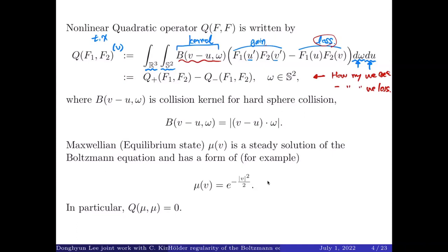For the Boltzmann equation, many people's main interest is to show global regularity and that the solution converges to global equilibrium as expected in statistical physics. When mass, momentum, and energy are normalized, it is standard to assume the global Maxwellian (a Gaussian). In the Maxwellian state, Q(μ, μ) = 0 by energy conservation, meaning binary collisions do not affect the propagation of the probability density function.